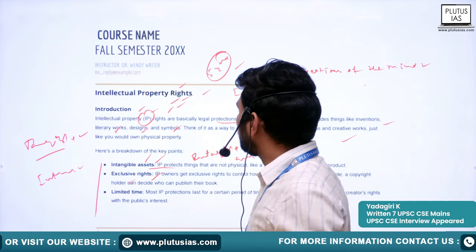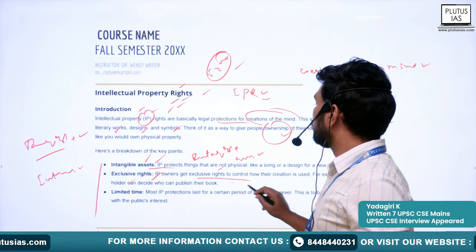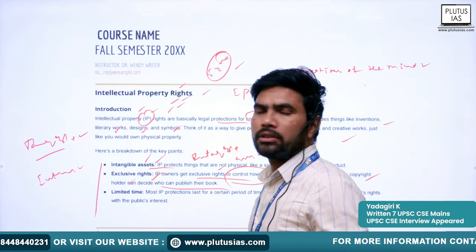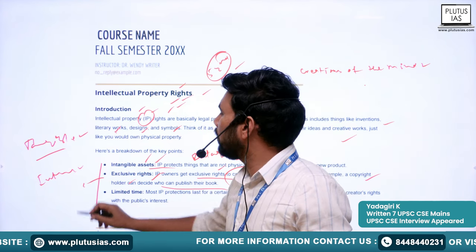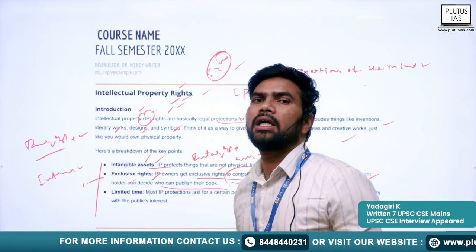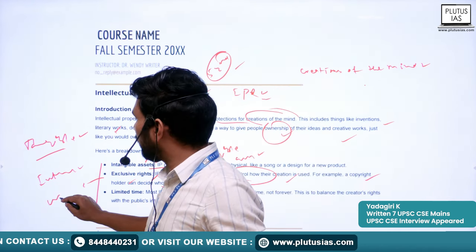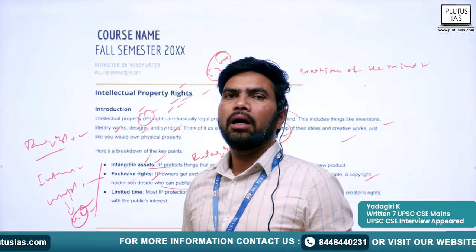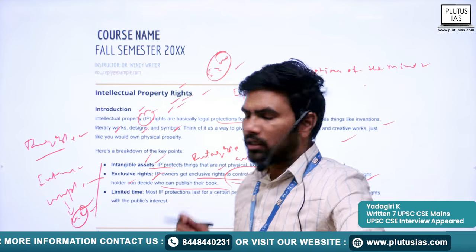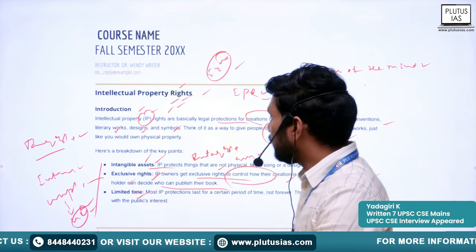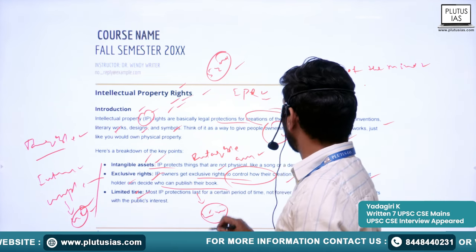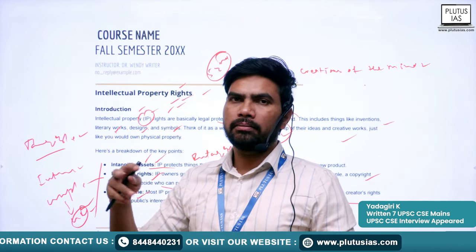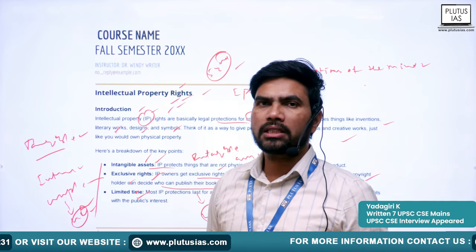These are exclusive rights generally. IP owners get exclusive rights to control how their creation can be used. For example, a copyright holder can decide who can publish their book. However, certain IPRs are not given exclusively to one person but to a group — for example, geographical indication is given to a community. IPR is also conferred for a limited time, not forever. After expiration of that period, the intellectual property becomes a national asset.